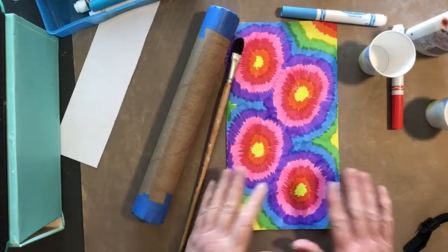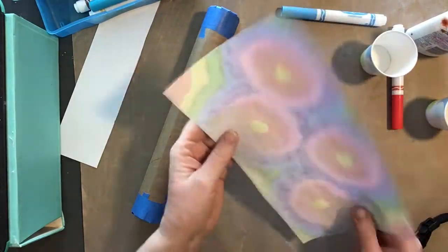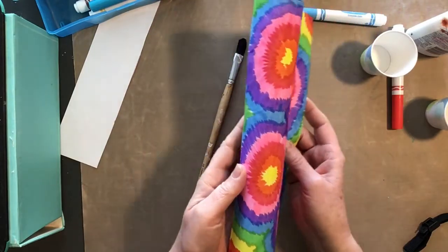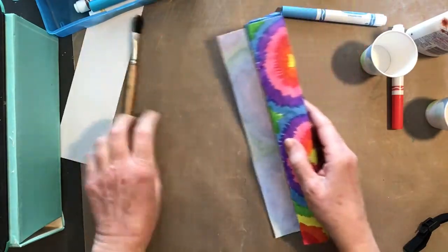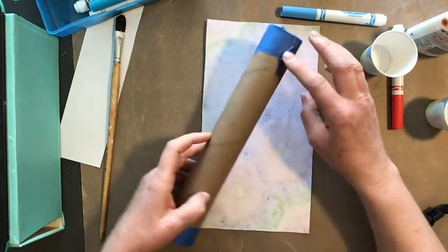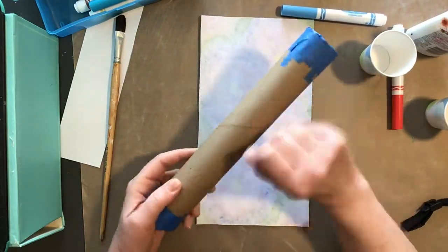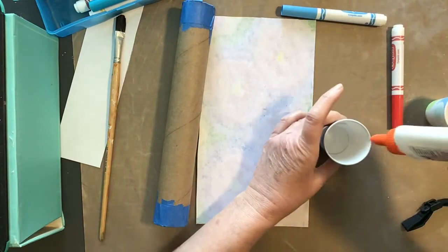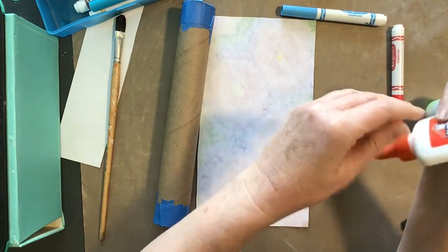Once you have your design colored and make sure you fill the whole space, then you're going to want to glue it onto the rain stick. You could take a glue stick and just cover the whole thing, but you'd probably use up your whole glue stick. What I'm going to do is I'm going to put some glue in a cup.